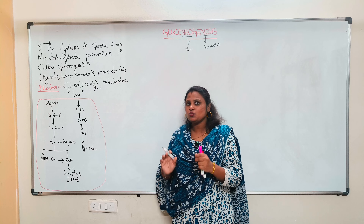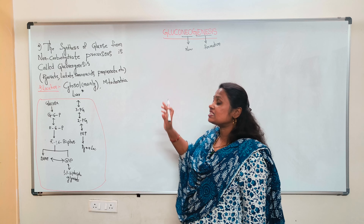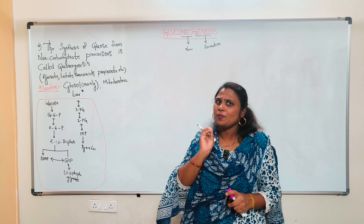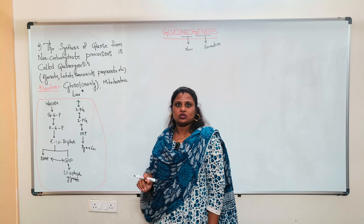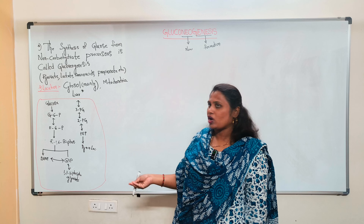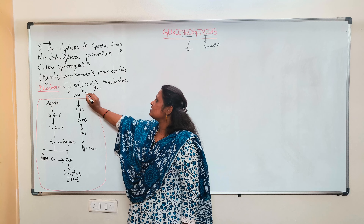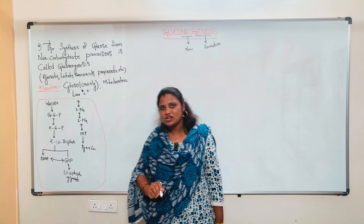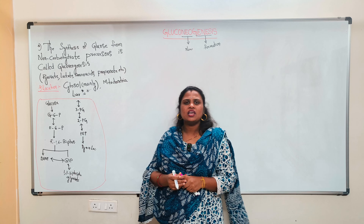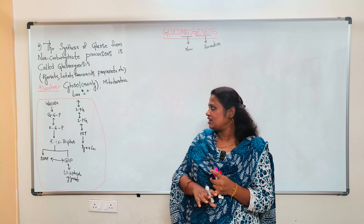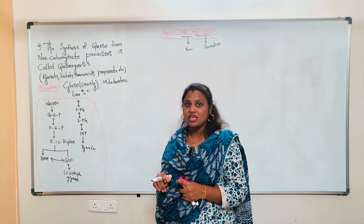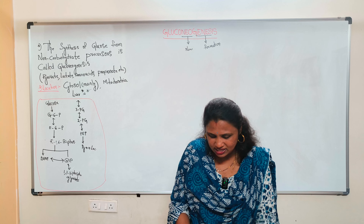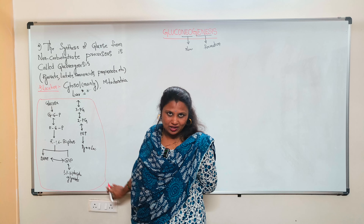Now, talking about the location where the pathway occurs: the main pathway is in the cytosol. Talking about the organ, the liver is the major organ involved in the synthesis of glucose. The gluconeogenesis pathway shares steps with glycolysis, but glycolysis has three irreversible steps.